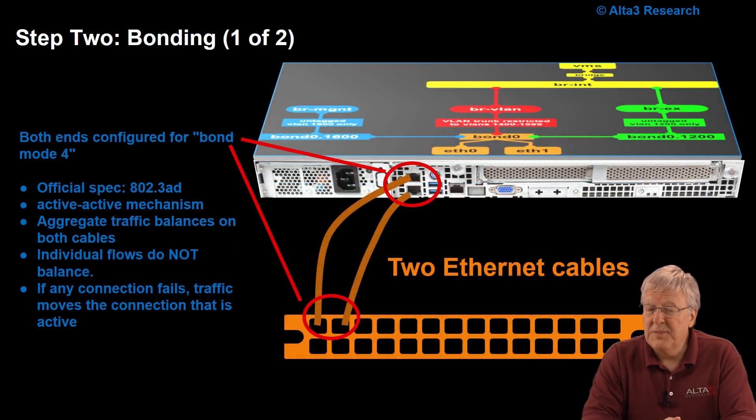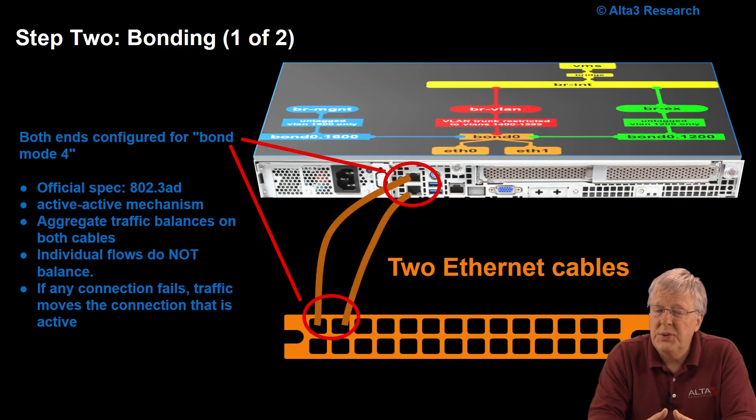Step two involves bonding. This is why we want two cables. At each end, we want to bond the ends and configure them for bond mode four. So the official spec is 802.3 AD. This is an active-active mechanism, which means if you unplug one cable, the other one takes over. But if they're both plugged in, they both work.